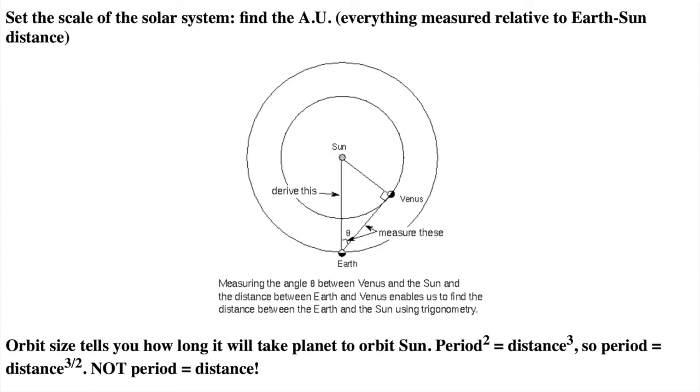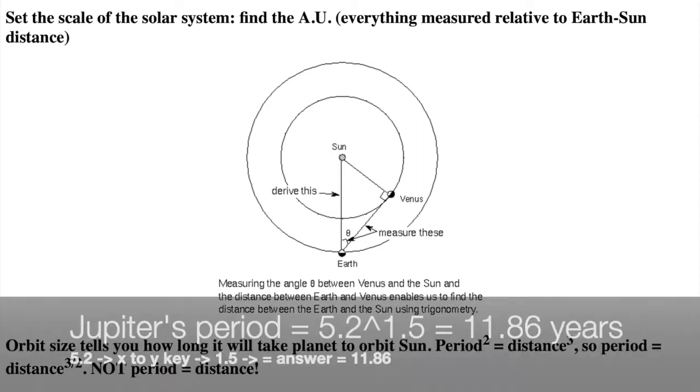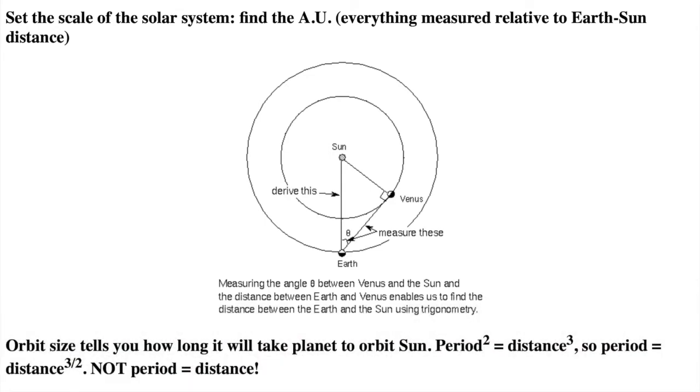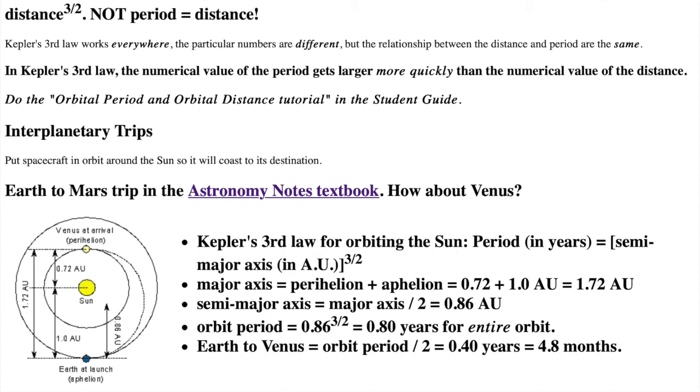For example, on your calculator or phone calculator app, to find how long it takes Jupiter, which is 5.2 AU from the sun to orbit the sun, you'd punch in 5.2, hit the x to the y key, then 1.5, then equals to find 11.86 years. For moons orbiting planets or satellites orbiting moons, the distance and time units would be different.